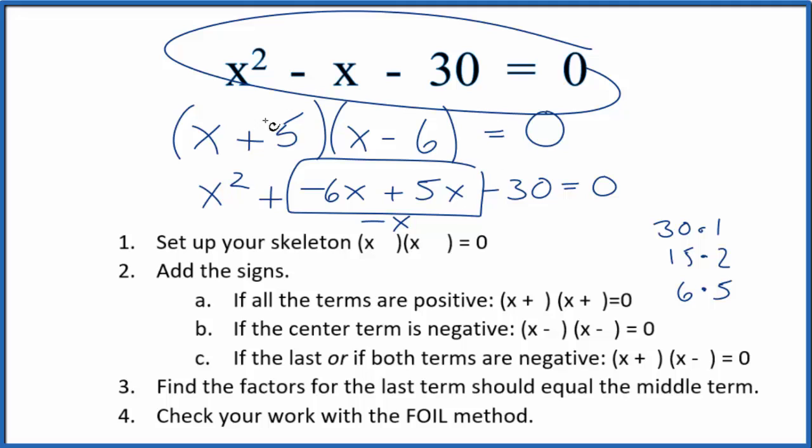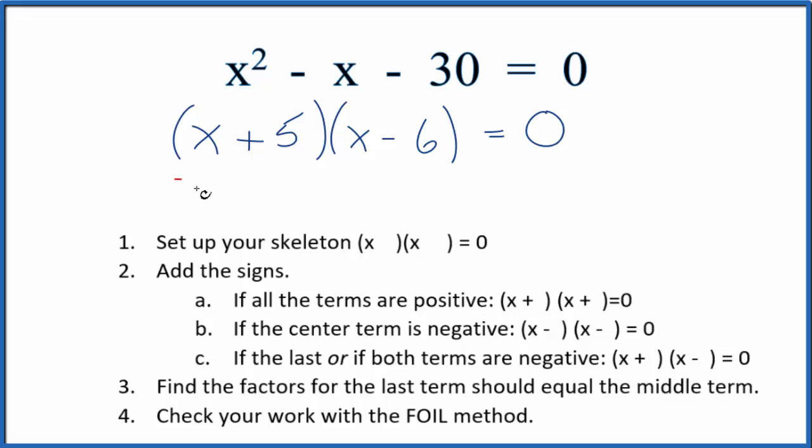Now, we should find the roots from this for this whole equation. We do that by setting x plus 5 to 0, and then we solve for x. So, we add a negative 5 to each side. x is going to equal minus 5.